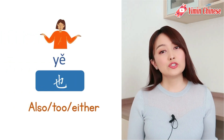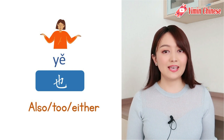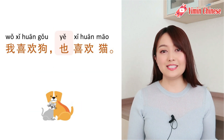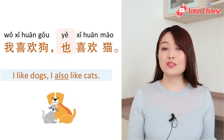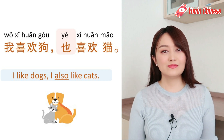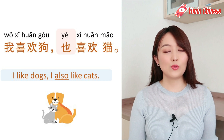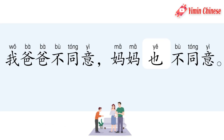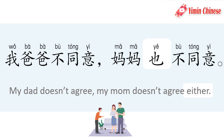好,下一个, it's also or either. In Chinese it's 也. 比如说 我喜欢狗也喜欢猫。I like dogs, I also like cats. Another example in which 也 means either: 我爸爸不同意，妈妈也不同意。My dad doesn't agree and my mom doesn't agree either.